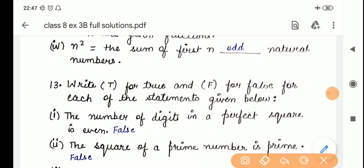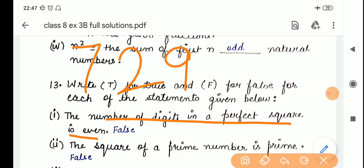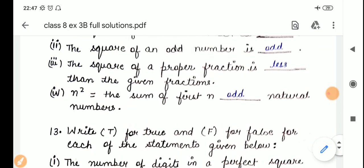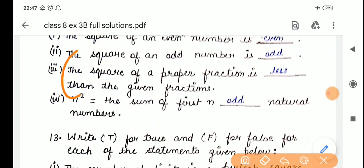The first part is, number of digits in a perfect square is even. It is not important. Odd number can also be... number of digits they are asking. What they are asking? Number of digits. Like, suppose, it is a perfect square, 729. Okay? We will take any number, square. 625 is a perfect square. Okay?